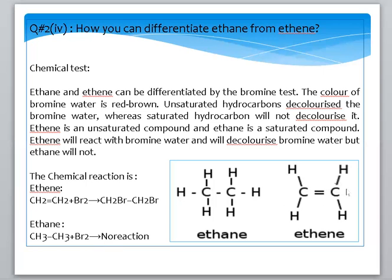This reaction is halogenation with bromine water. When the double bond breaks, bromine adds to both sides, forming a new substance: 1,2-dibromoethane. Ethane, being saturated, shows no reaction with bromine water.